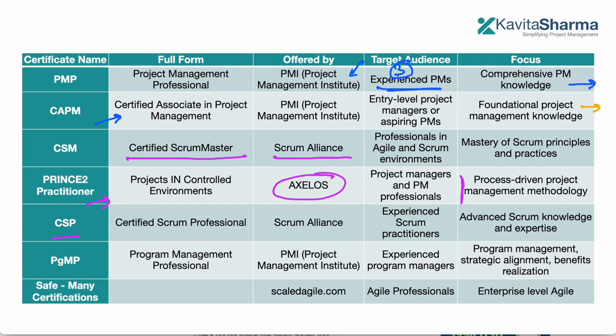I am a PMP as well as PRINCE II certified. The next one: CSP, Certified Scrum Professional, again this is from Scrum Alliance, and this is for experienced scrum practitioners, this is for senior people. Then we have PGMP. People who are managing programs, people who are managing multiple projects, it's for those people. This is for experienced program managers, not project managers. This is the next certification you can aspire for after PMP certification.